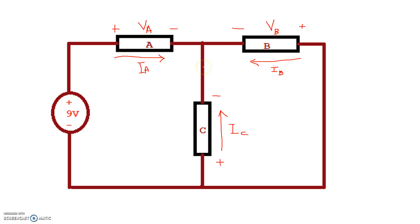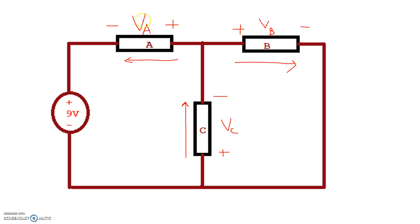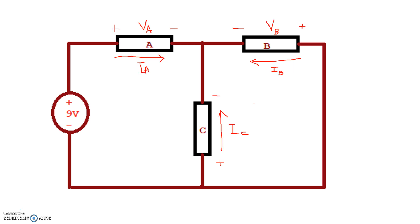If we hadn't started that way, we could have used the exact same circuit by saying current IA flows from right to left, making the polarity minus-plus VA. We could have decided current IB flows in the other direction, giving plus-minus VB. And we could have chosen the voltage polarity for C as plus on the bottom and minus on top, meaning current IC flows from bottom to top. Circuit analysis with these assignments would yield the same magnitudes but different polarities — and that's fine, because it doesn't matter which direction we pick, as long as we stay consistent and follow passive sign convention for each element.